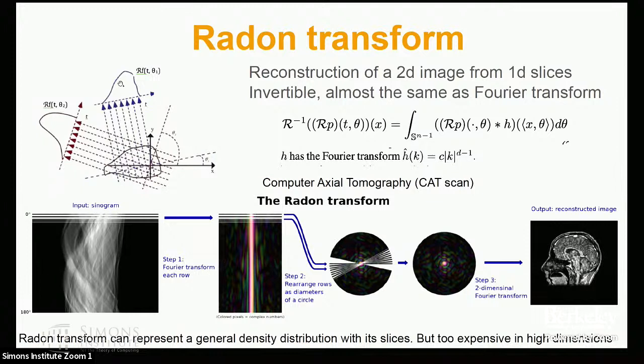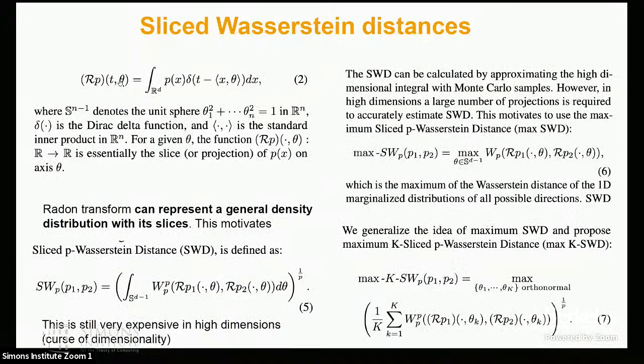The issue is when we scale to high dimensions — we had a lot of slices in the two-dimensional example, but as we go to higher and higher dimensions, we get the curse of dimensionality. It is impossible to do all possible slice directions and average over them. So the next best thing is to look for directions of the largest distance between the slices — this is where optimal transport distance comes in.